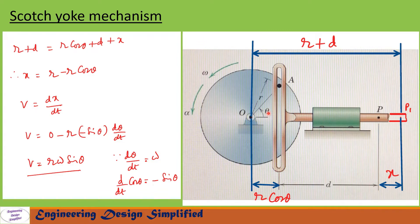When the angle theta equals zero, let us assume this point P on the slider will assume position P1. The distance between O and P1 can be written as r plus d — r is the radius of the crank and d is the distance between this slot and point P — so the total distance is r plus d. When the crank rotates by an angle theta, P1 will come to position P.